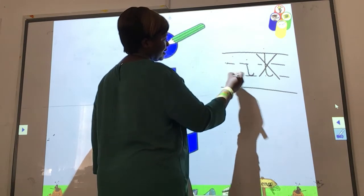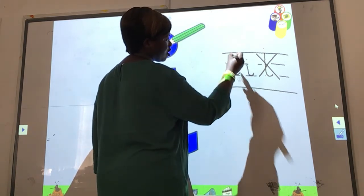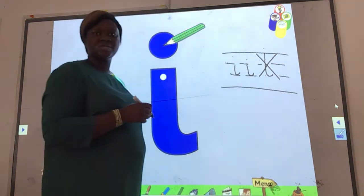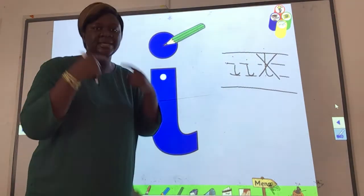So stand in line, tail forward and a dot. So what sound does it make? E. Okay.